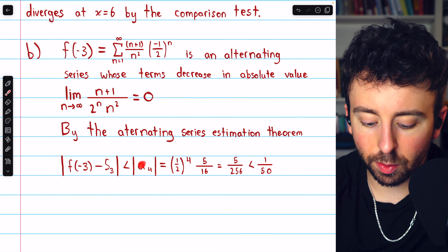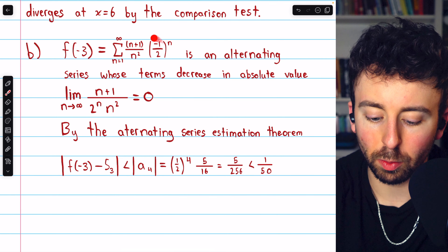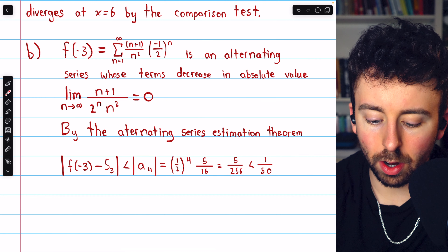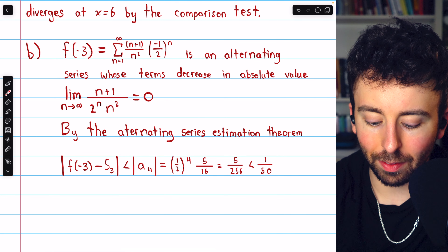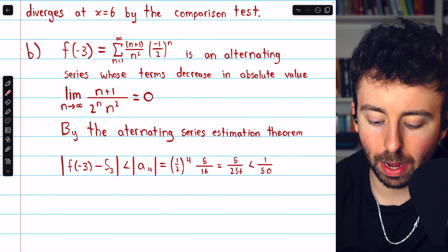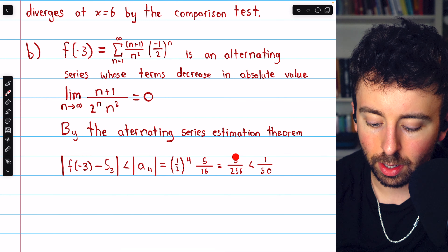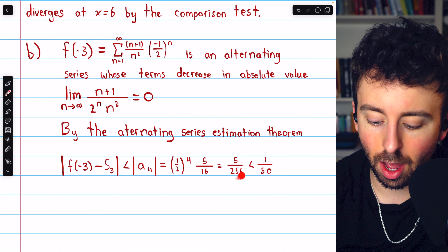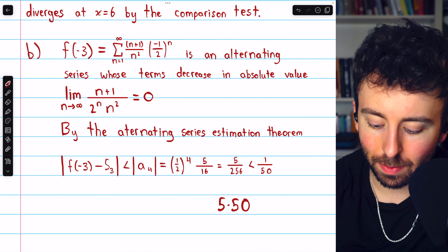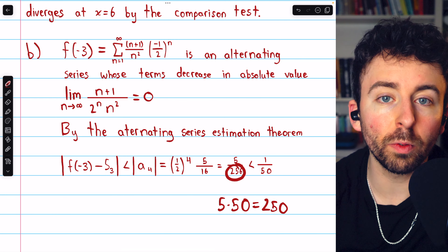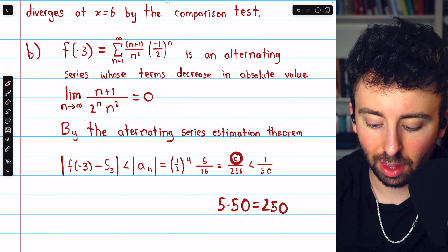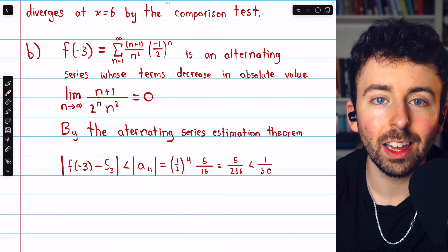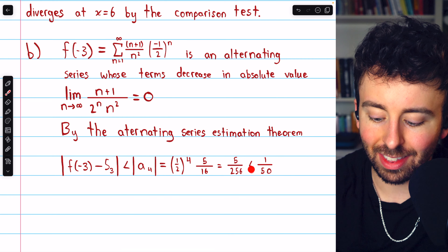We find a4 by plugging n equals 4 into the general term of the series. That gives us 4 plus 1 over 4 squared, so 5 over 16, times negative 1 over 2 to the power of 4. Since we have absolute value bars, the negative goes away, so it's just 1 over 2 to the 4. This equals 5 divided by 2 to the 4 times 16. 2 to the 4 is 16, and 16 times 16 gives a denominator of 256. Now, 5 times 50 is 250, which is less than 256, so 5 over 256 is indeed less than 1 over 50, which is exactly what we set out to prove.